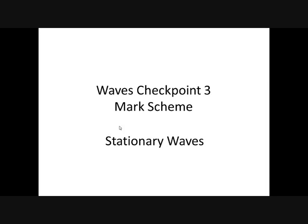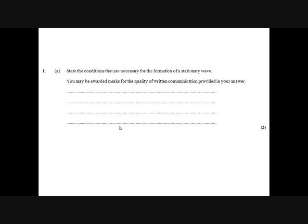This is checkpoint 3 on stationary waves. The first question here is about how a stationary wave is formed, and it's very important that when you look at these diagrams of waves all the way through this checkpoint, you're clear on the difference between a progressive wave where a peak is moving and a stationary wave where the particles vibrate up and down but there are nodes and antinodes and you can't see the wave moving in either direction. That's why it's called a stationary wave.